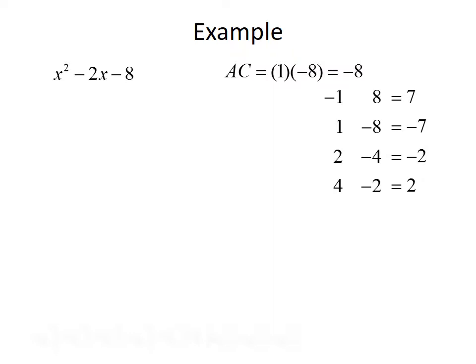Adding those factors together: negative 1 plus 8 is 7, 1 plus negative 8 is negative 7, 2 plus negative 4 is negative 2, and 4 plus negative 2 is 2. Since b is negative 2, the factors we're looking for are 2 and negative 4. We'll use these to rewrite the trinomial as x squared plus 2x minus 4x minus 8, replacing the negative 2x with 2x minus 4x. Now we're going to factor by grouping.